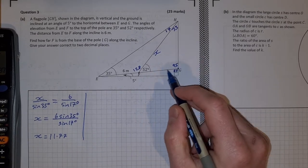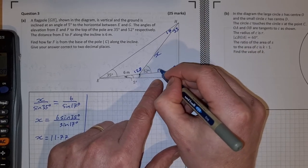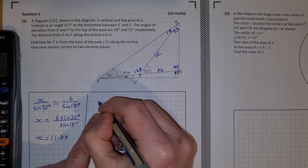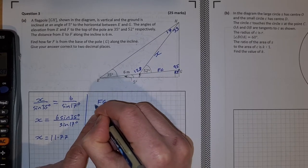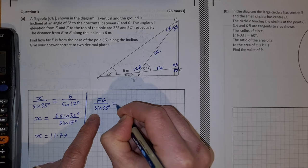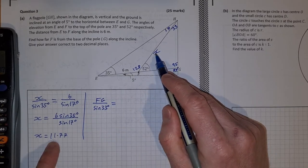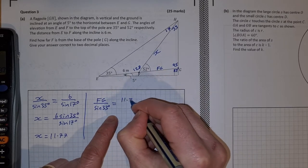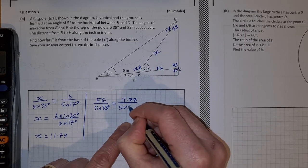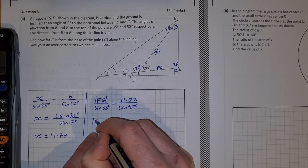So that gives me 11.77. Now I can go into this triangle to find this length. Let's call FG the one that I want, so it'll be FG over sine 33 is equal to my X which was 11.77 over sine of 95.